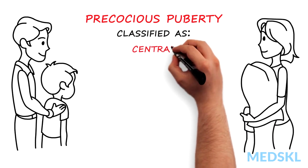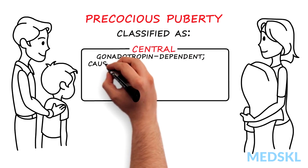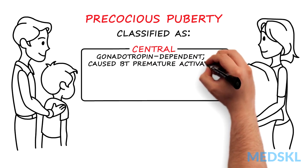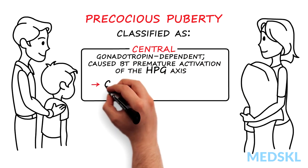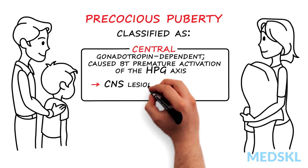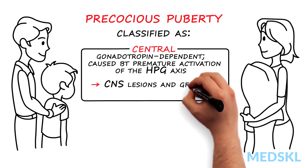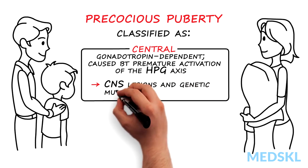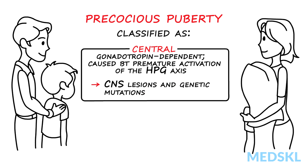Central precocious puberty is gonadotropin dependent and is caused by premature activation of the HPG axis. Causes include CNS lesions, for example hematomas, CNS tumors, CNS irradiation, hydrocephalus, and genetic mutations.